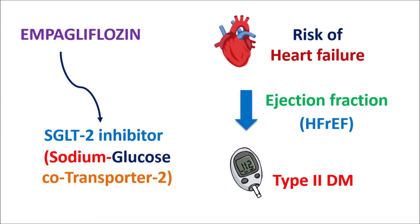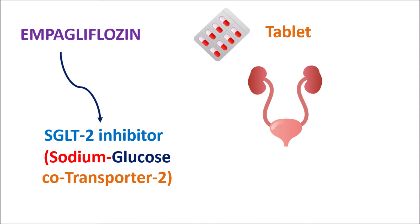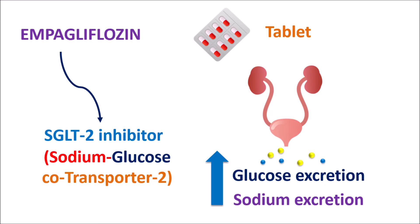Empagliflozin acts as a sodium glucose co-transporter 2 inhibitor, which reduces the absorption of glucose. This medication is available as a tablet and mainly acts on the renal system, reducing the absorption of glucose and thereby affecting glucose excretion. Since glucose reabsorption is inhibited, glucose excretion in the urine is increased. Along with glucose, empagliflozin can also increase sodium excretion, which reduces body volume and thereby reduces cardiac work. One of the main actions of empagliflozin is volume depletion.